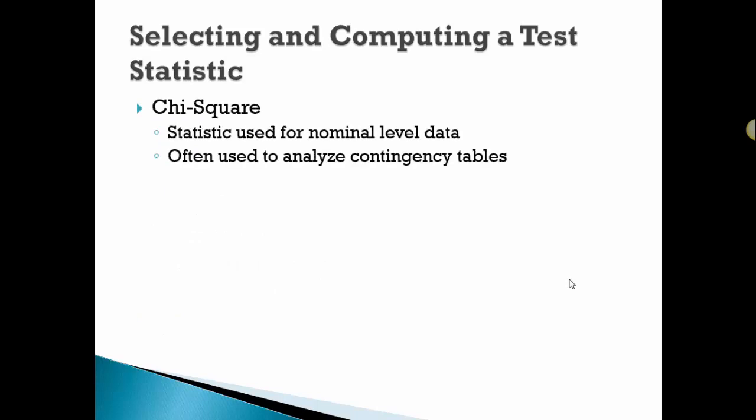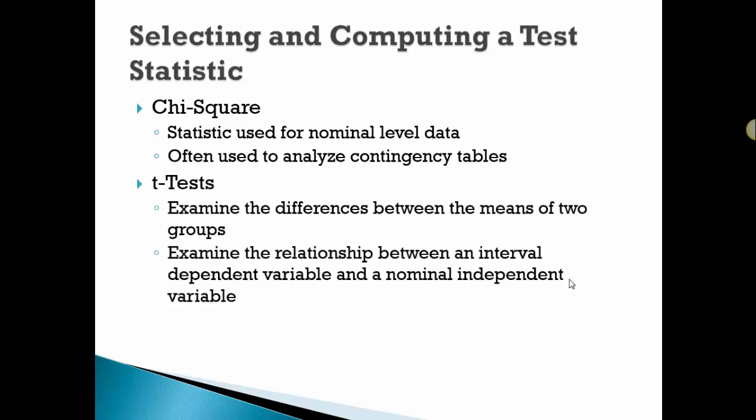We're going to talk about chi-square statistics, which is used for nominal-level data and often used to analyze contingency tables. Next week we'll talk about t-tests, which examine the differences between means or simply a test of a single mean. We're looking here at an interval-dependent variable and a nominal-independent variable.